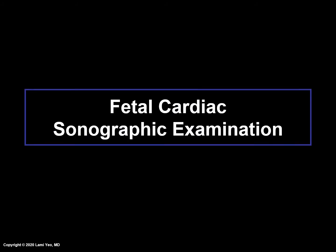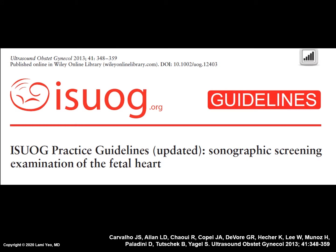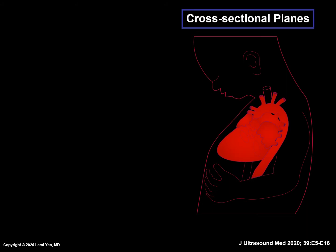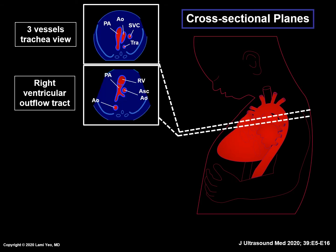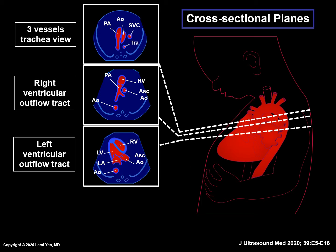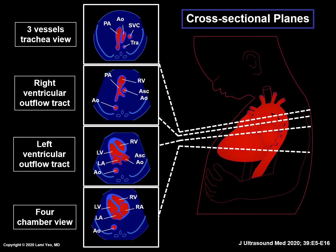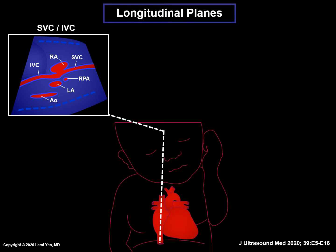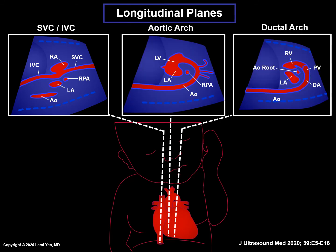In order to determine whether a fetal heart is normal or not, there are specific cardiac views that should be obtained by ultrasound. These have been described by the ISUOG, or International Society of Ultrasound in Obstetrics and Gynecology, as well as the AIUM, or American Institute of Ultrasound in Medicine. Sonographic examination of the fetal heart requires cross-sectional planes including the three vessels and trachea view, right ventricular outflow tract, left ventricular outflow tract, and the four-chamber view, as well as longitudinal planes such as the superior and inferior vena cava, aortic arch, and the ductal arch.